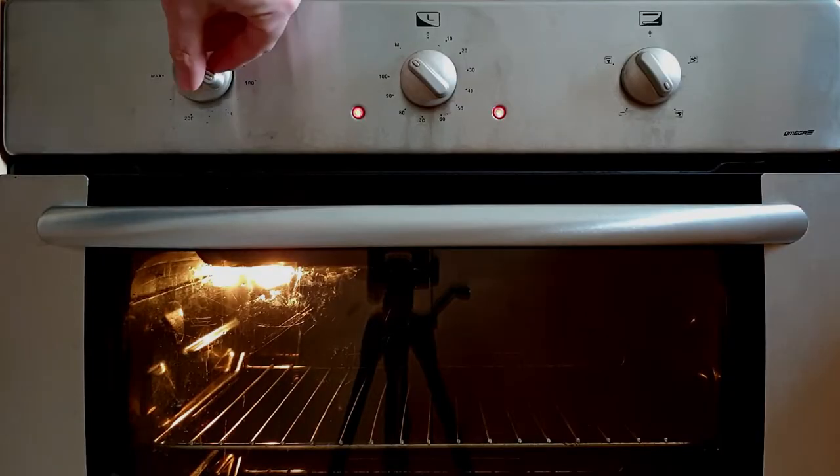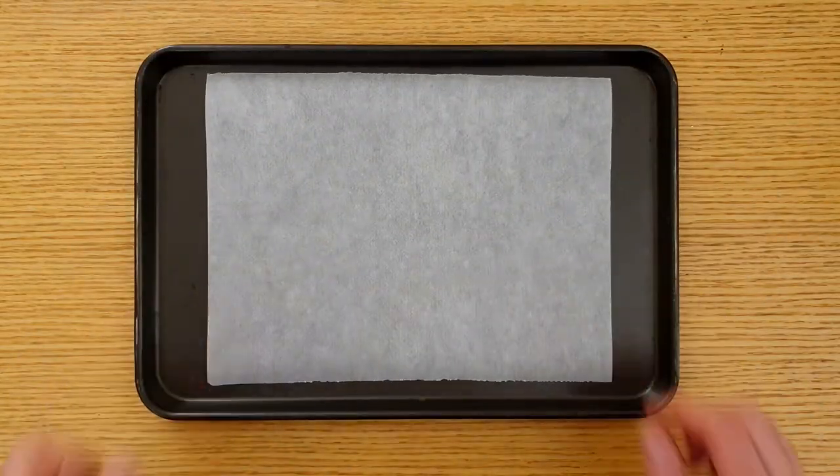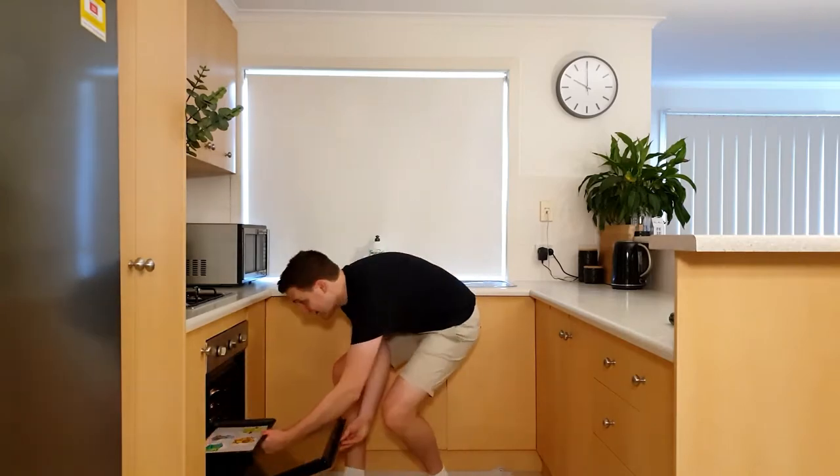Now for the fun part, making them shrink. Preheat your oven to 200 degrees Celsius. Place your drawings on some non-stick paper on an oven tray, and then get an adult to put this in the oven.